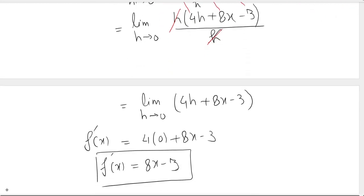Now we are left with 4h plus 8x minus 3, and we can apply the limit because it is not giving us 0 in the denominator, which would make the function undefined. So we can apply the limit straightaway for h.